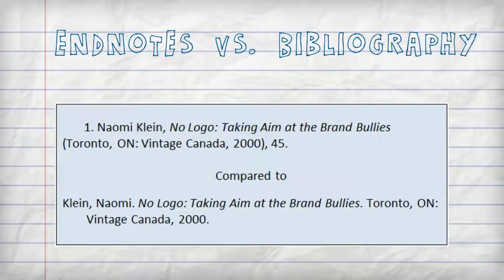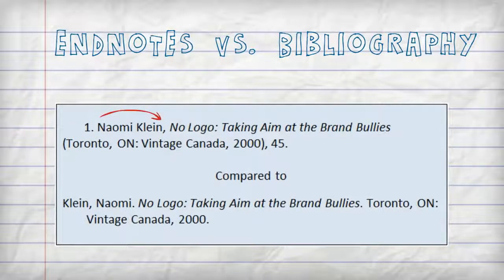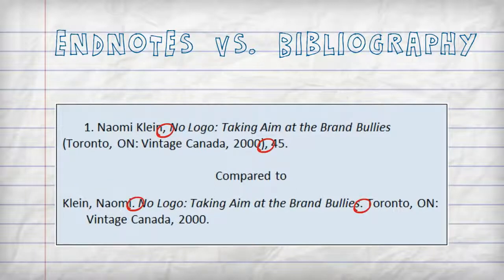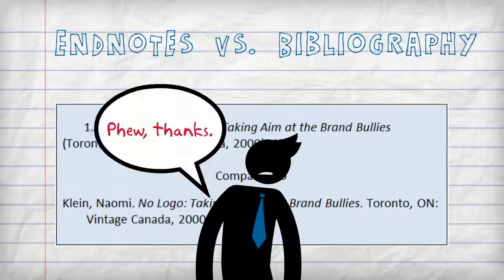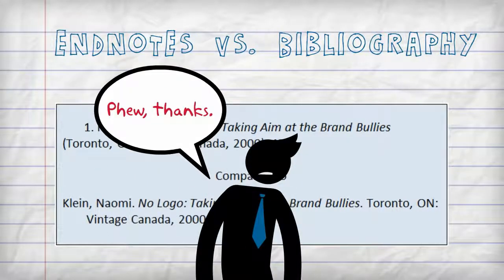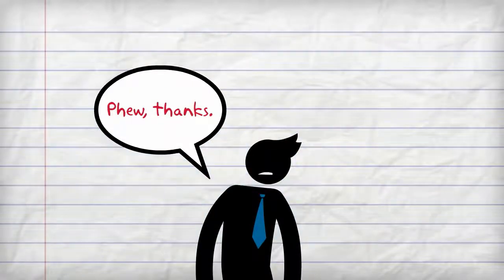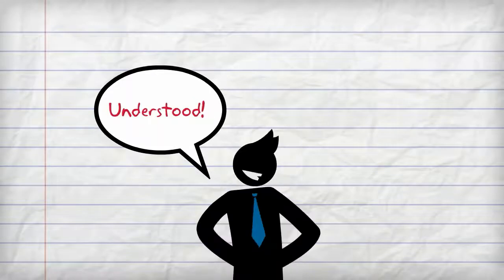For example: note number versus no note number, author's first name and last name versus author's last name then first name, commas up in the endnotes versus periods in the bibliography. And there are more differences too, but let's not go crazy on the details. The point is, you have to ensure you're citing with accuracy.